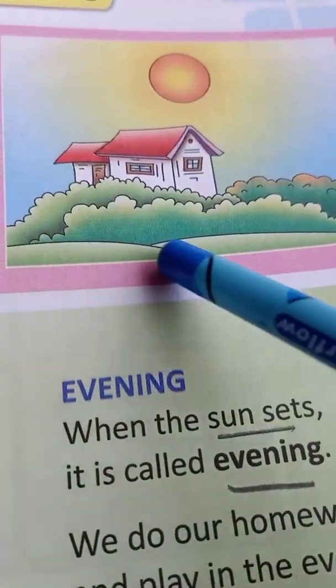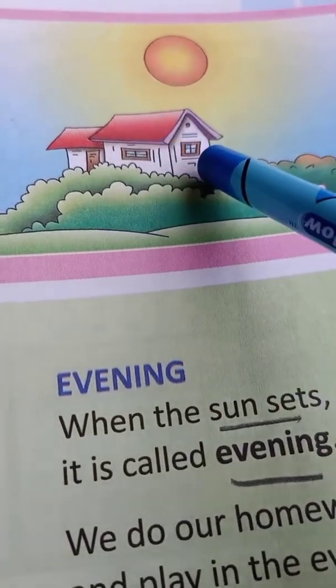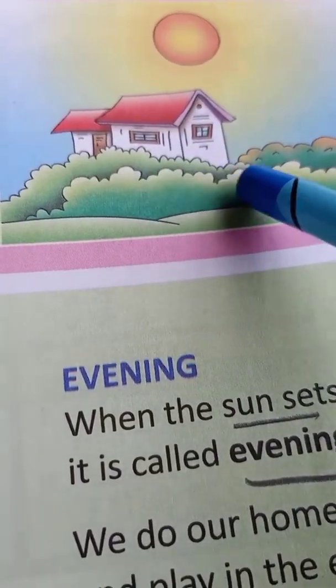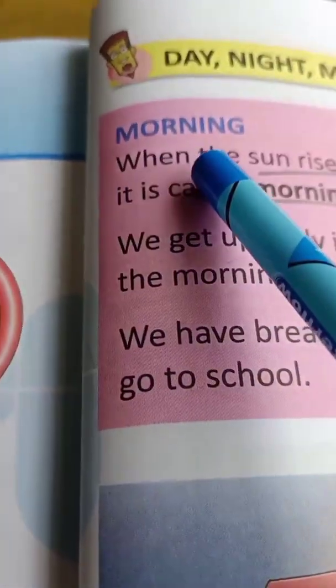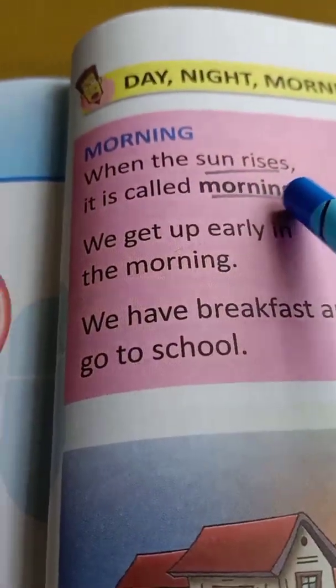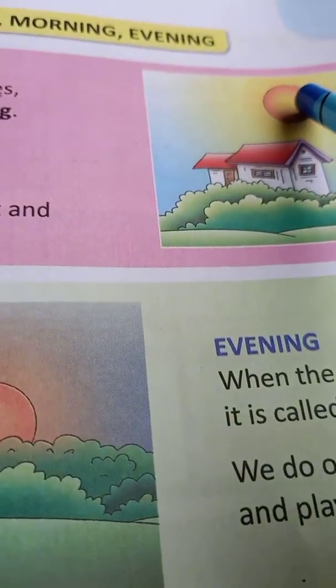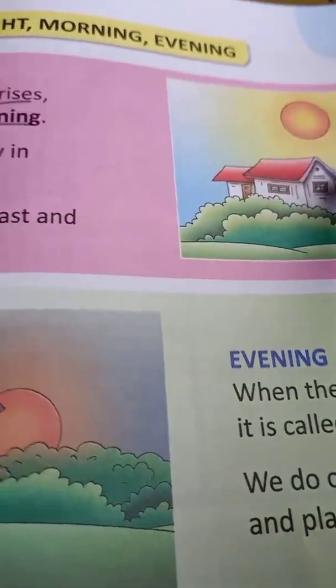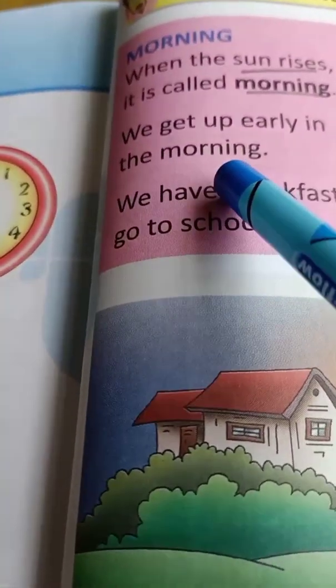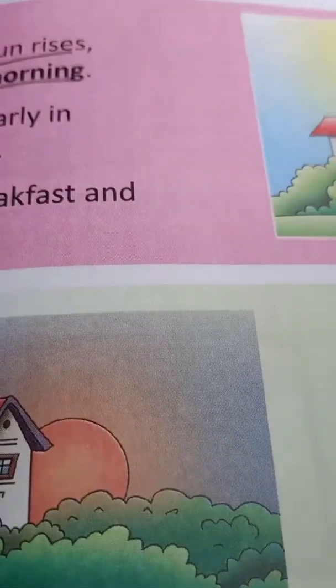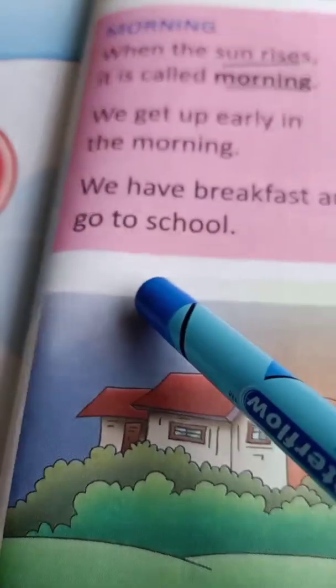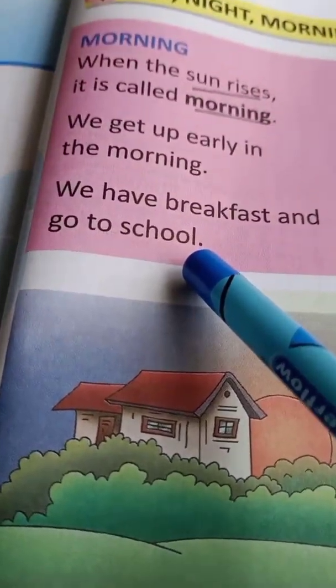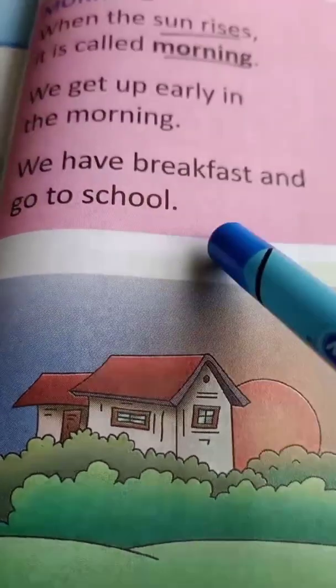See the picture here. This is the picture of morning. One house is here, the sun is here, greenery is here. Morning — when the sun rises, it is called morning. We get up early in the morning. We sleep in the night and in the morning we get up early. We have breakfast and go to school.